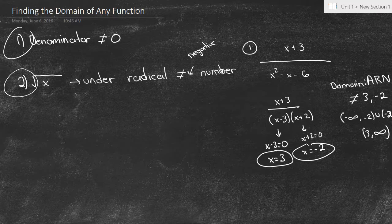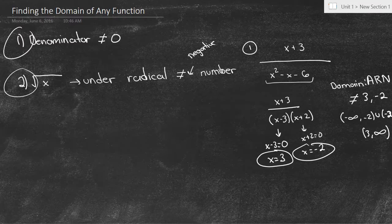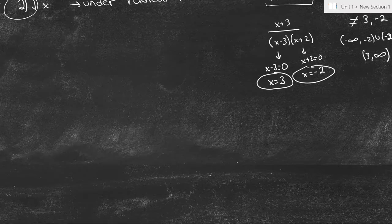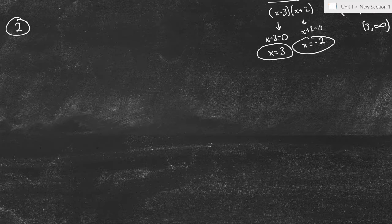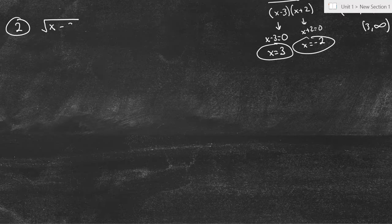So what we did there is we saw the denominator can't equal zero, and so we solved for those values. Now for the second example, we're going to do one of the radical ones. We're going to say we have the square root of x minus 9, plus 3.